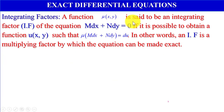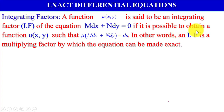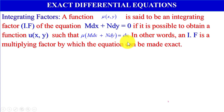A function mu(x, y) is said to be an integrating factor of the equation M dx plus N dy equals 0 if it is possible to obtain a function u(x, y) such that u times (M dx plus N dy) equals du. In other words, an integrating factor is a multiplying factor by which the equation can be made exact.